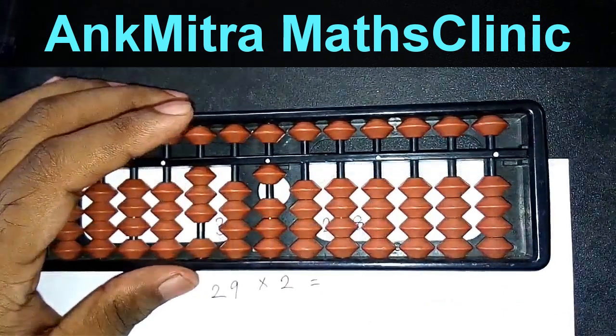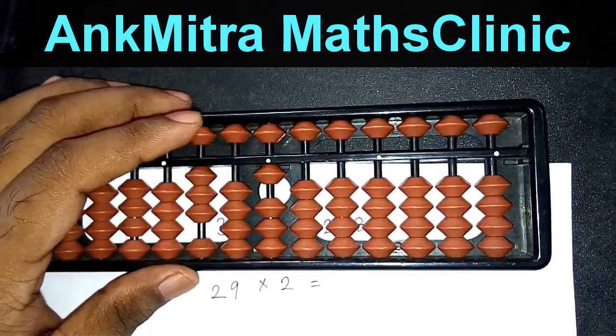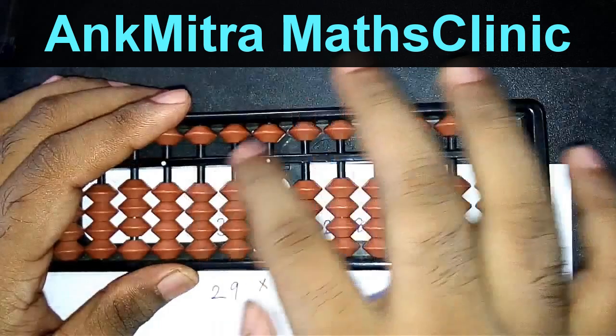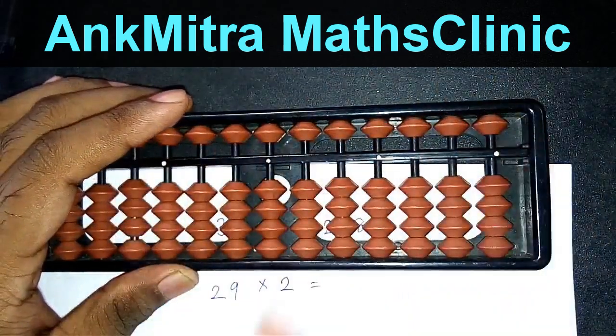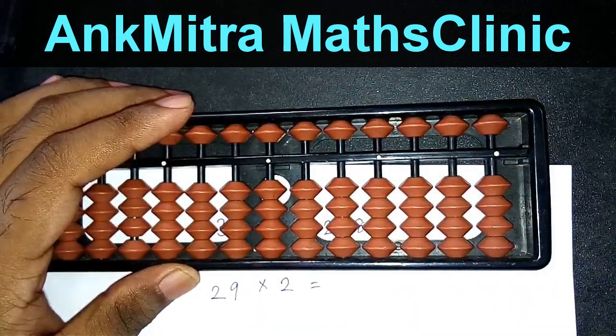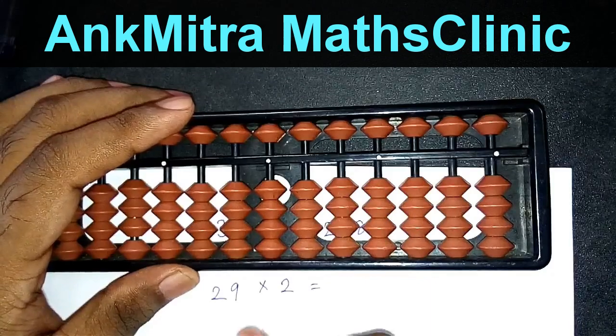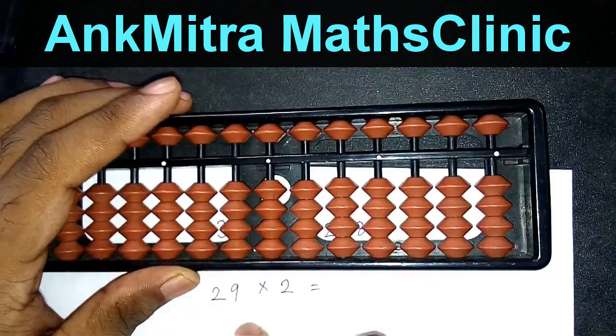Now coming to the third example here, 29 multiplied by 2. I've taken this example deliberately to show you the importance of the two-digit answer that we need to take for any table.